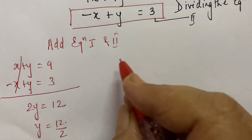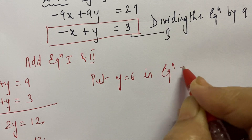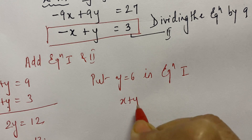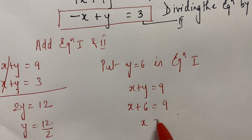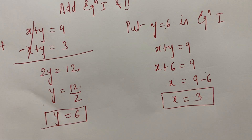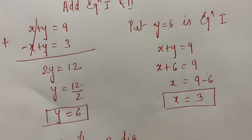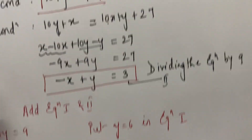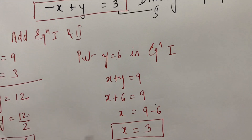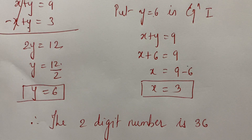Now we put y equals 6 in Equation 1. Equation 1 is x plus y equals 9. In place of y we put 6, so x will be 9 minus 6, which means x equals 3. So the 2-digit number formed — with x in the tens place and y in the units place — will be 36.